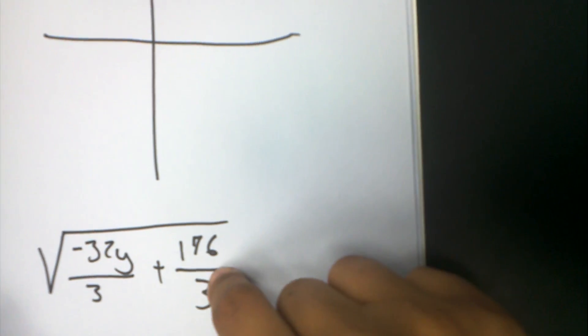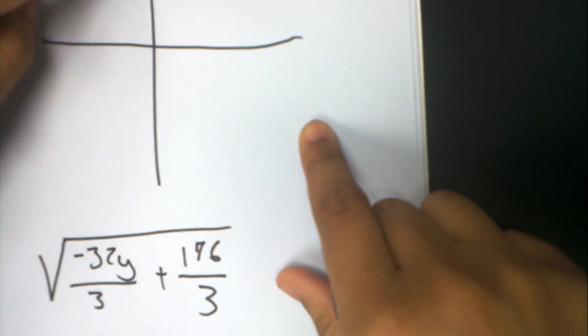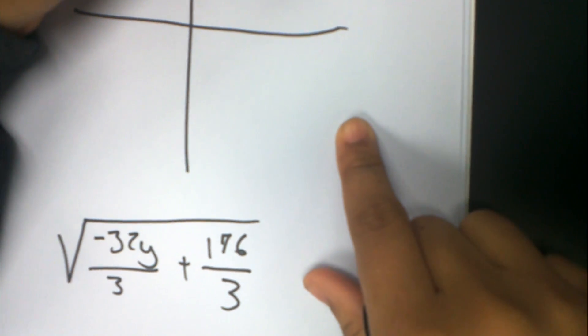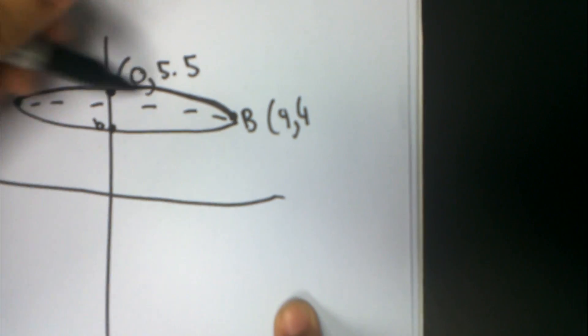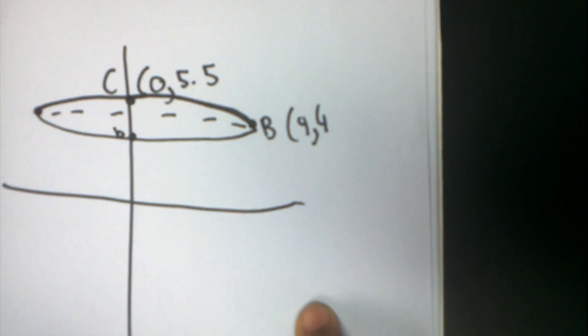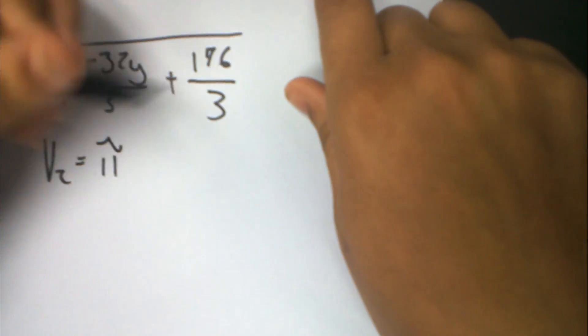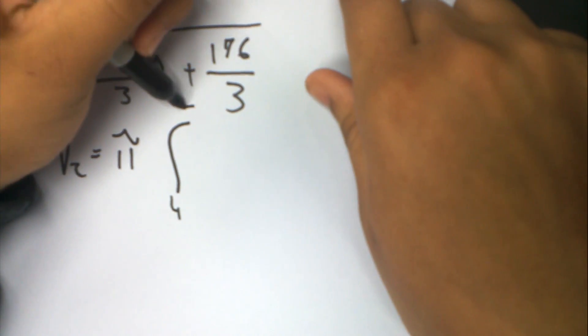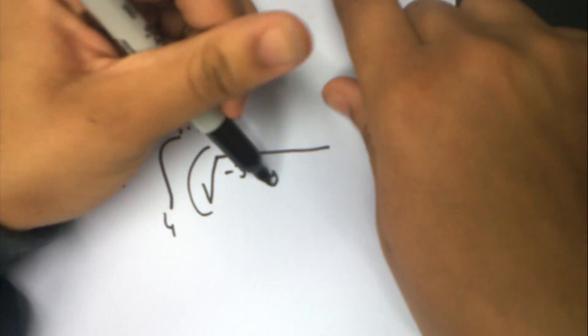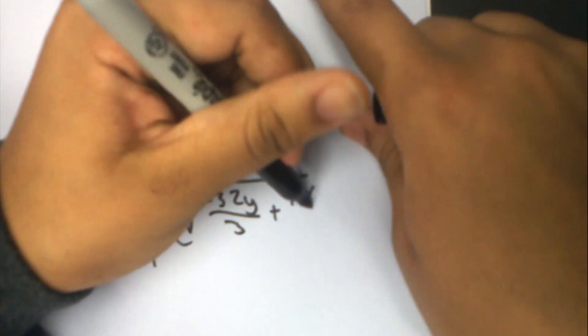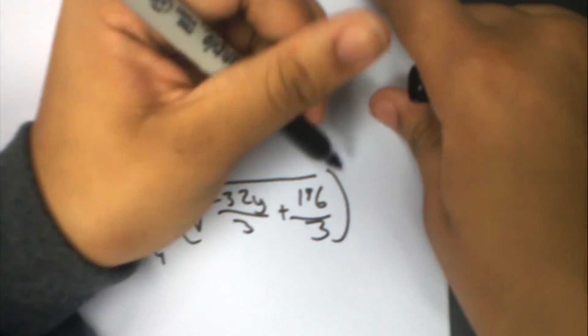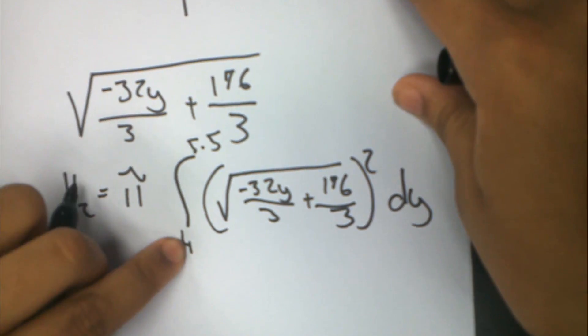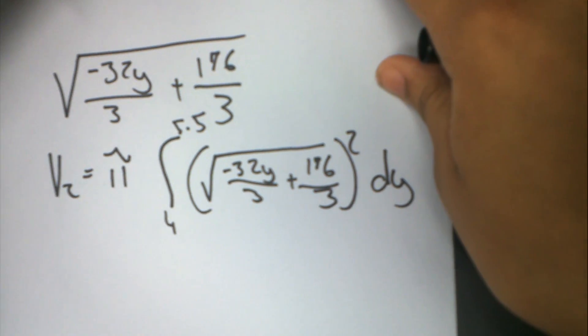Now we're going to plug it into the formula to find the volume of the whole thing. It goes from B to C, which is y = 4 to y = 5.5. So Volume 2 equals pi times the integral from 4 to 5.5 of the function squared — that is, negative 32y over 3 plus 176 over 3 — with respect to y.